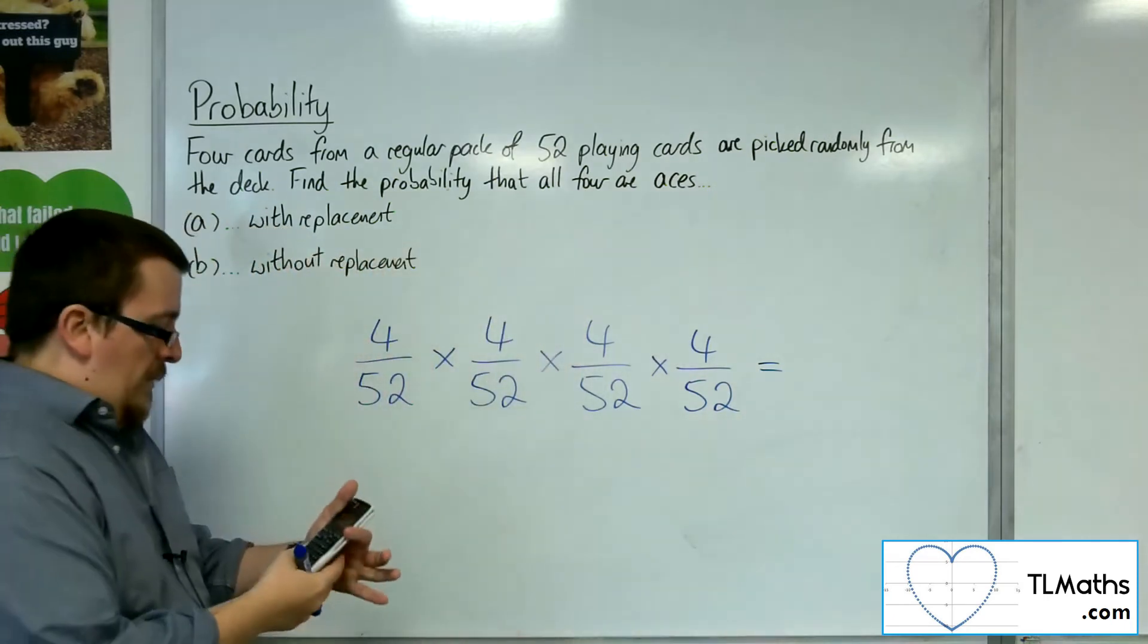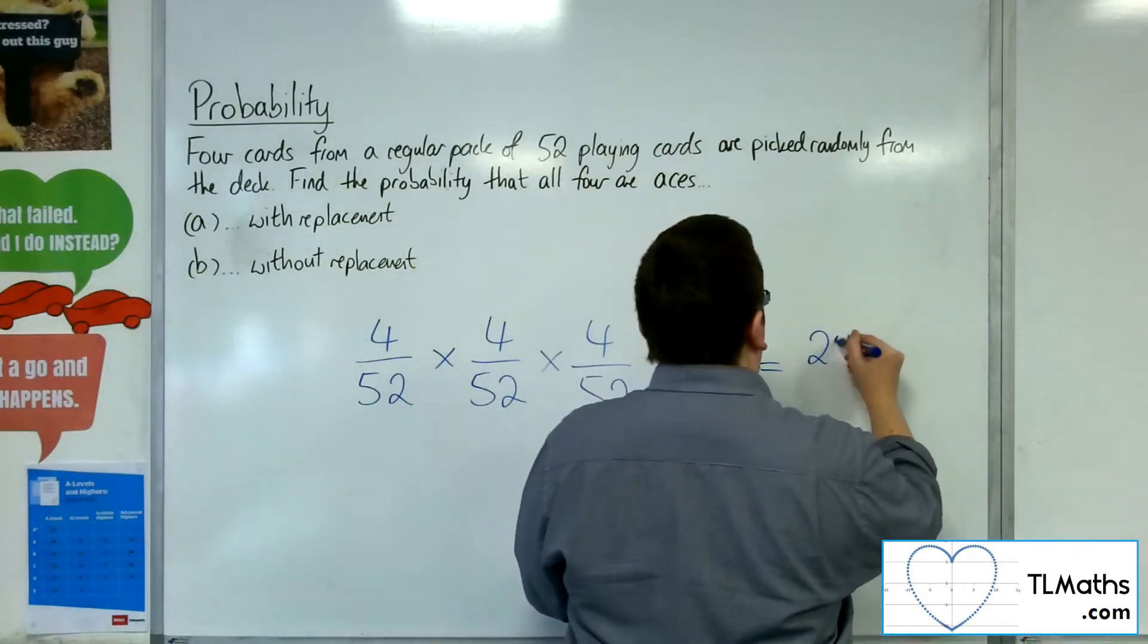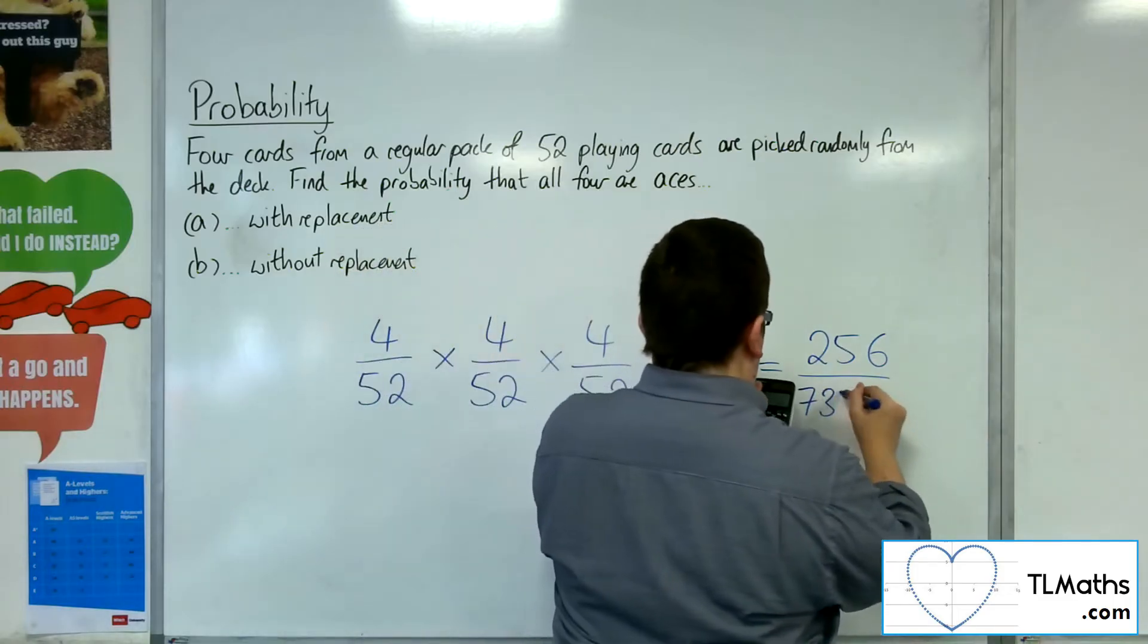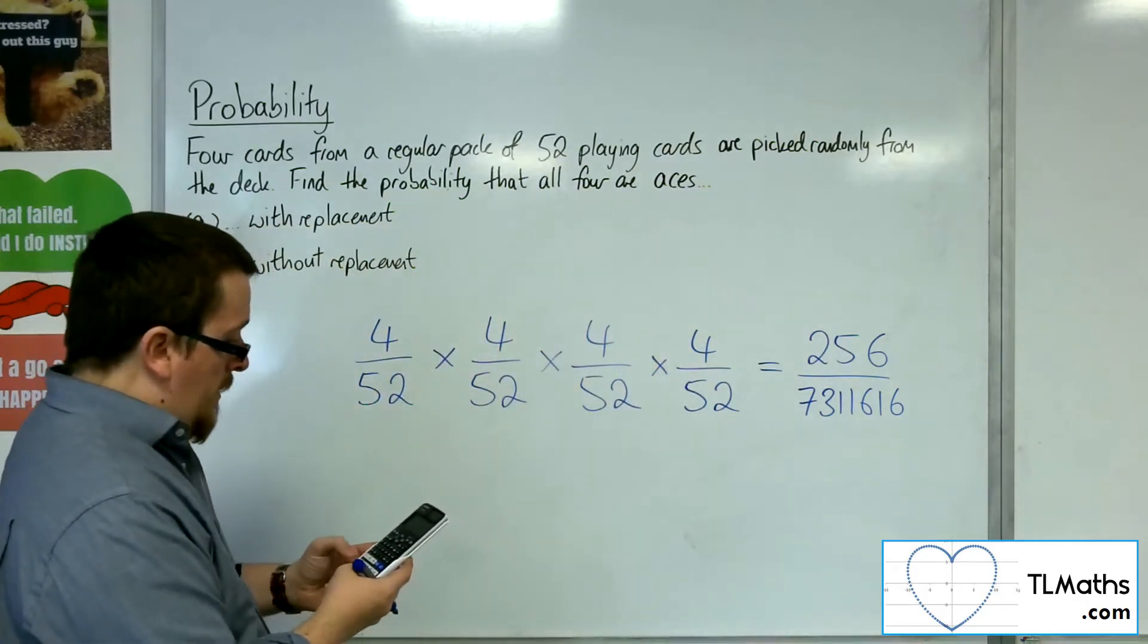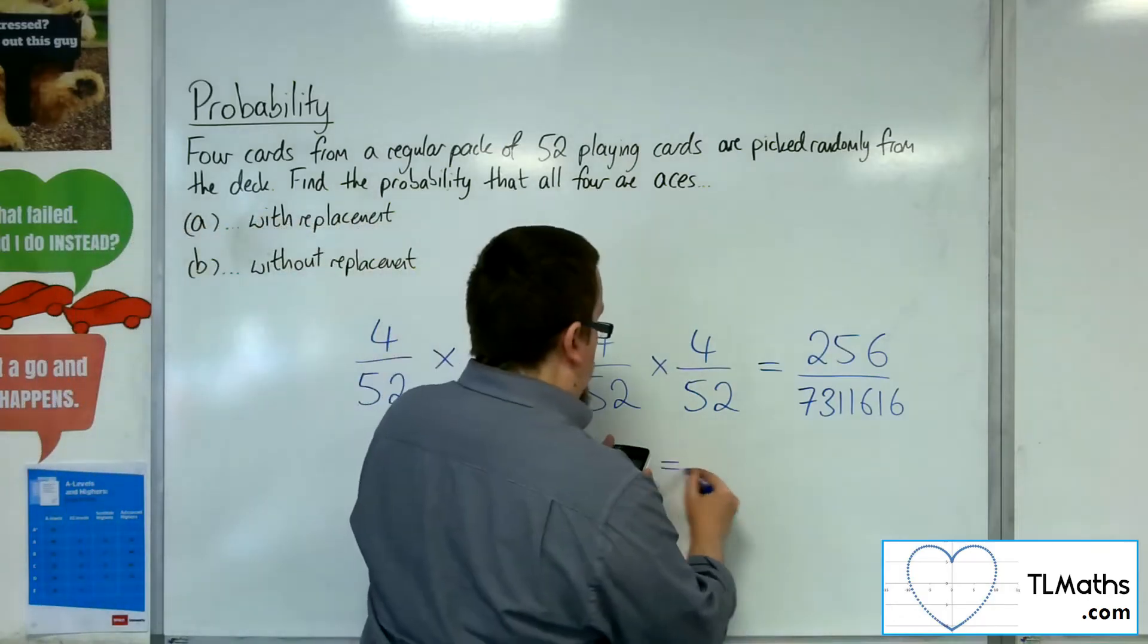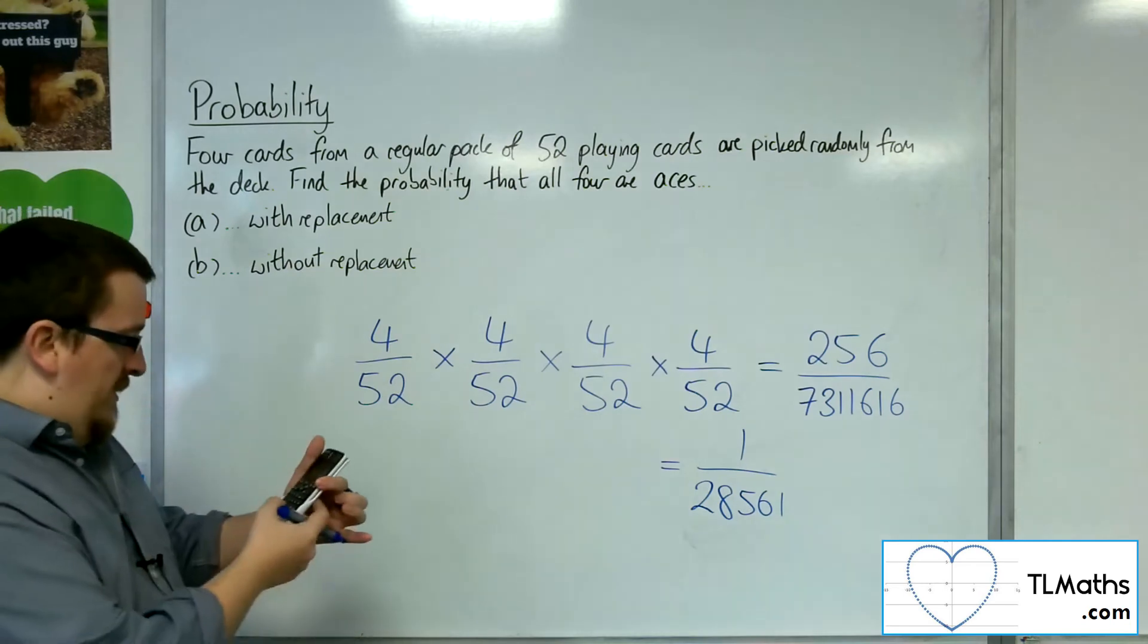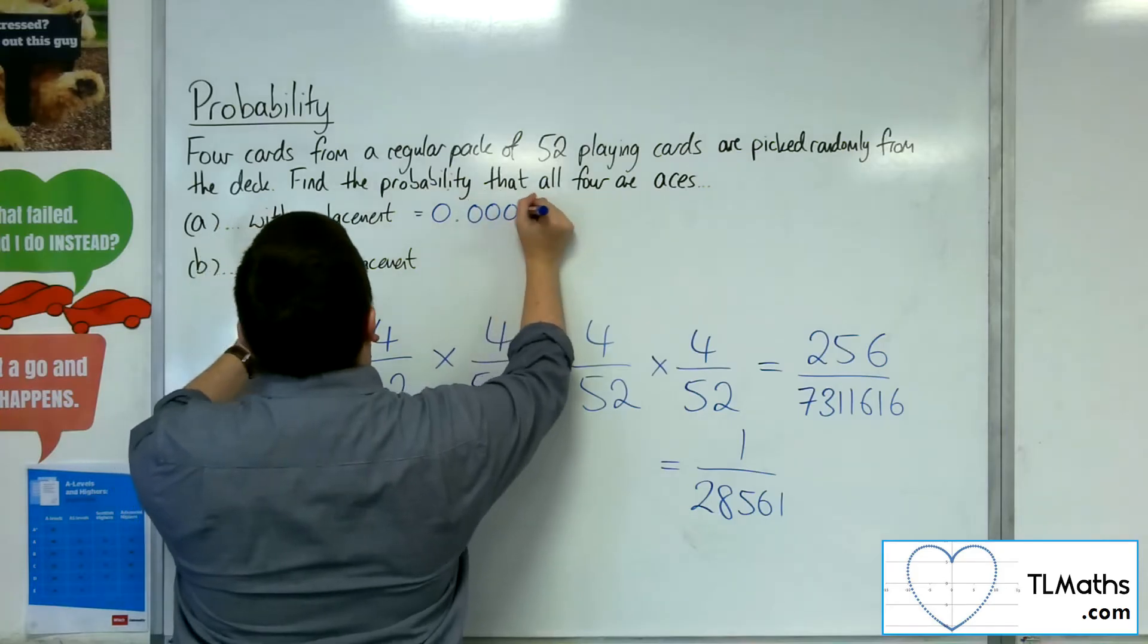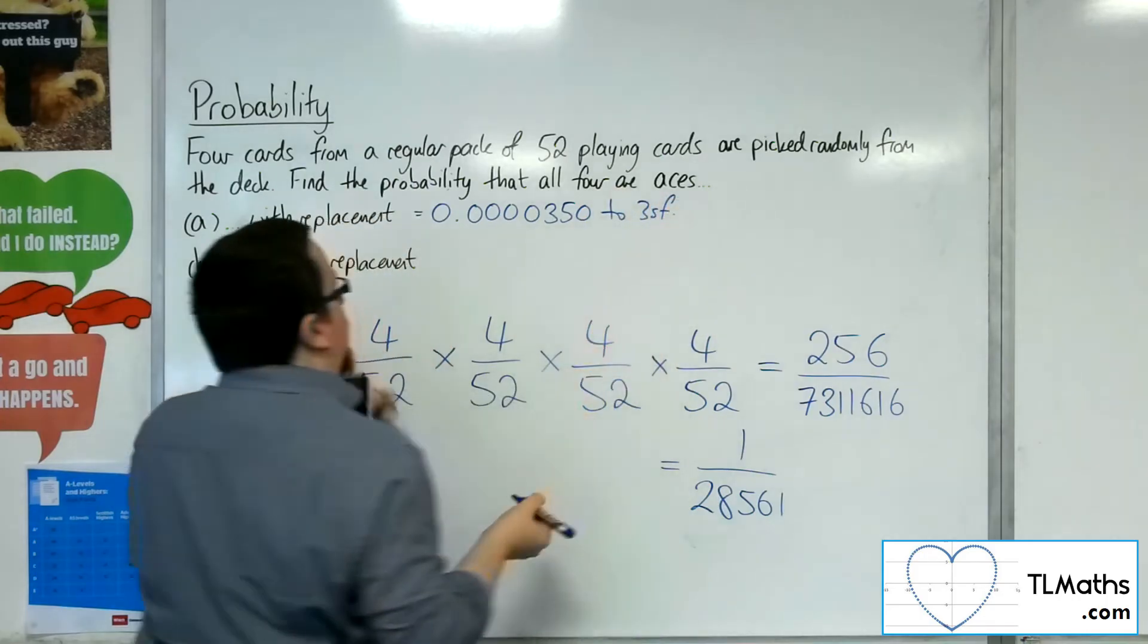So 4 to the power of 4 is 256, and 52 to the power of 4 is 7,311,616. So this simplifies to 1 over 28,561, which is 0.000350 to three significant figures.